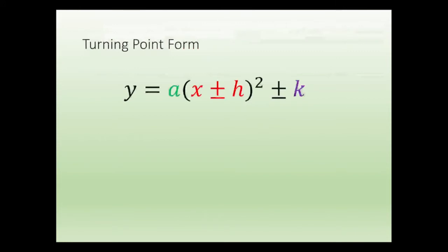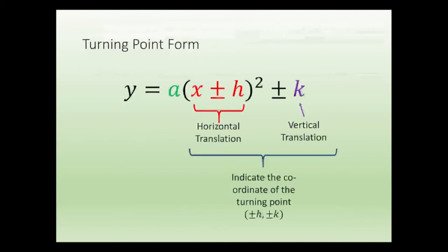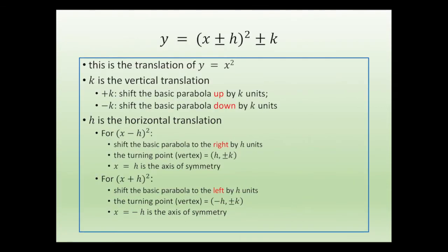This is the turning point form. You know that x plus h gives us a horizontal translation. The k gives us a vertical translation. And by knowing h and k, we can find the coordinate of the turning point. The a here is the dilation factor, and it also tells us whether the parabola is concave up or concave down. We are concentrating on y equals x plus or minus h squared plus or minus k.